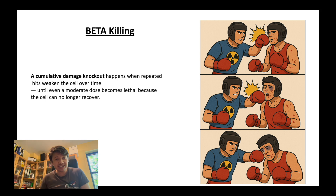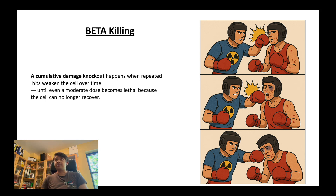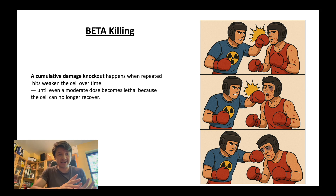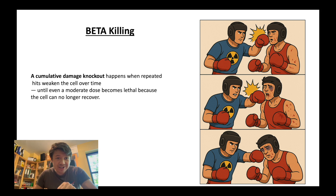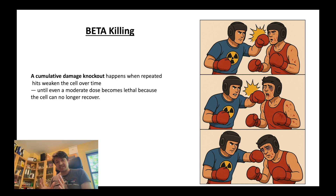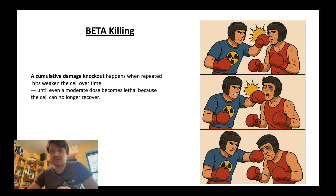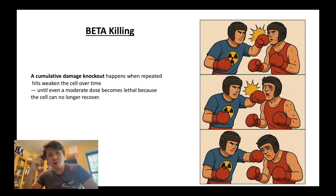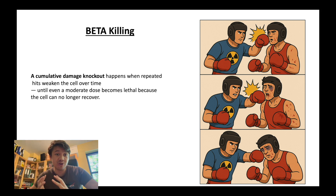Let's go back to our boxing analogy. It's like in a boxing match when the boxer doesn't receive a massive big punch that knocks him out instantly — that's alpha killing. But here, our boxer receives a series of blows: a jab in the nose, a hook in the liver, another body shot, and each of these punches taken separately wouldn't have knocked him out. But because of all these previous hits, even one more small punch can become lethal.